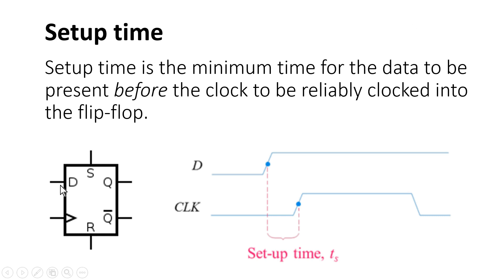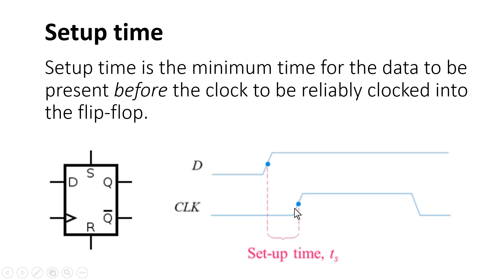Now let us discuss setup time, the third important characteristic of a flip-flop. D is transferred to Q at the positive or negative edge of the clock depending on the type of flip-flop. However, this is a crude definition. In actual practice, D should be stable for some minimum time before the positive edge of the clock so that D can be transferred to Q reliably. This minimum time is called the setup time.